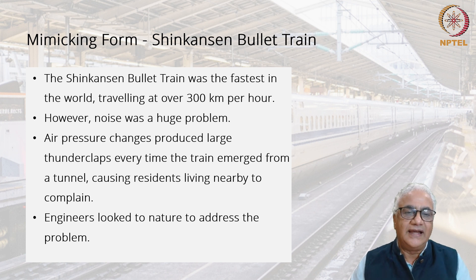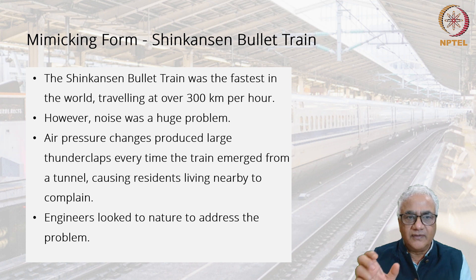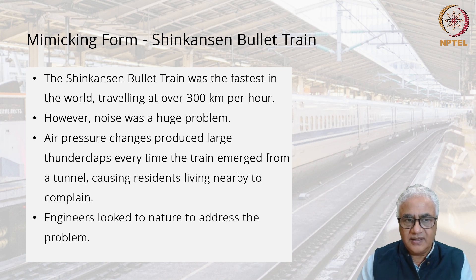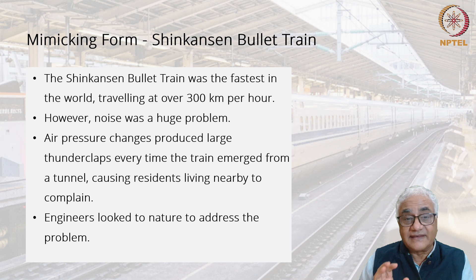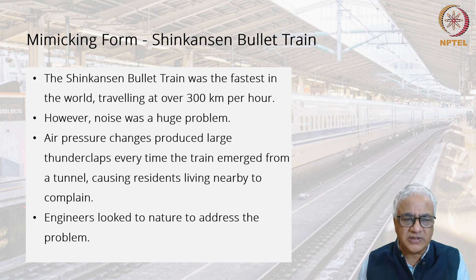This is going to be very, very soon in India too — the bullet train. The bullet train is an example of imitating form. Just go through this very quickly and you will find that the Shinkansen bullet train was the fastest in the world, traveling at 300 kilometers per hour. But the noise was a problem. People were actually complaining, saying there's too much noise.